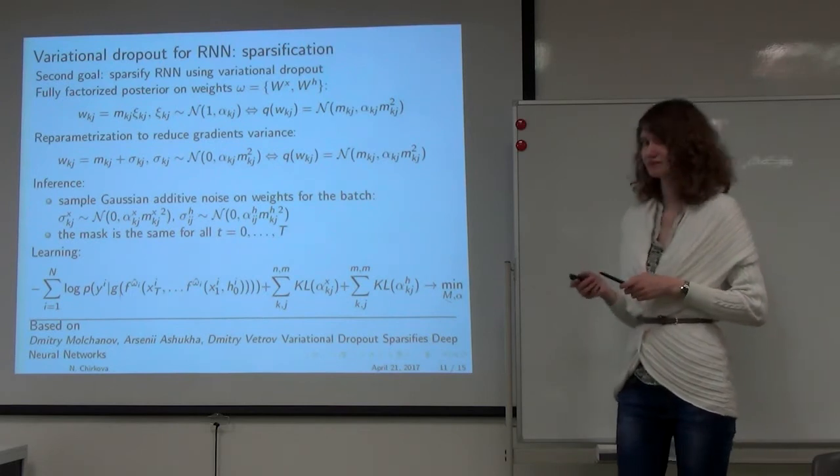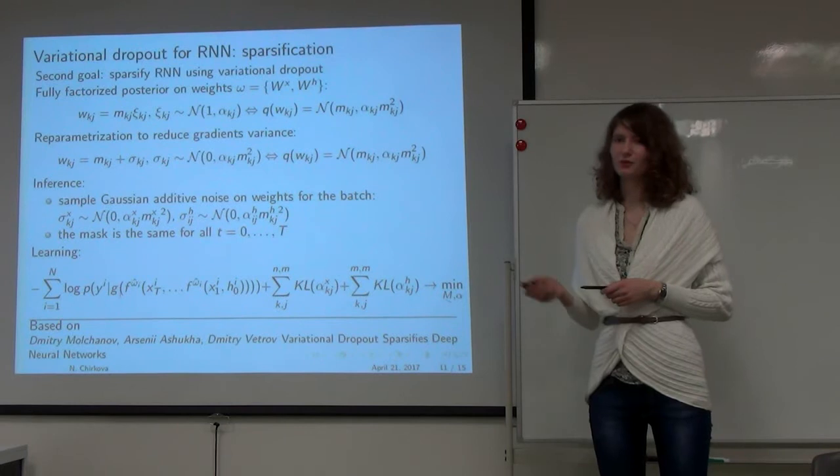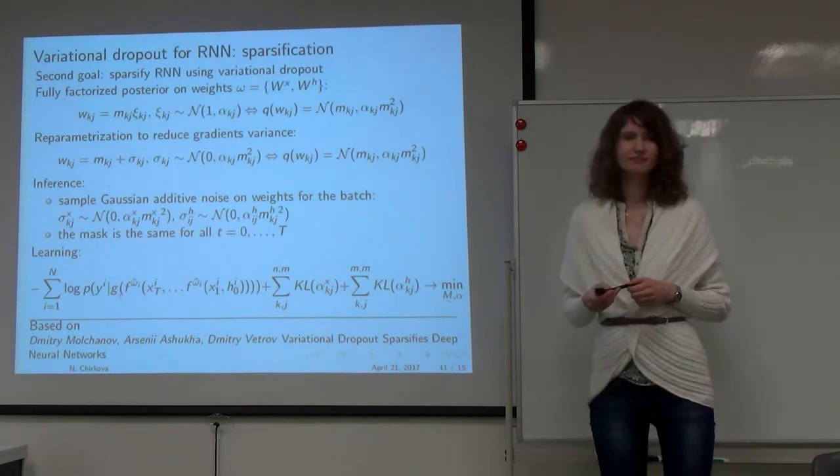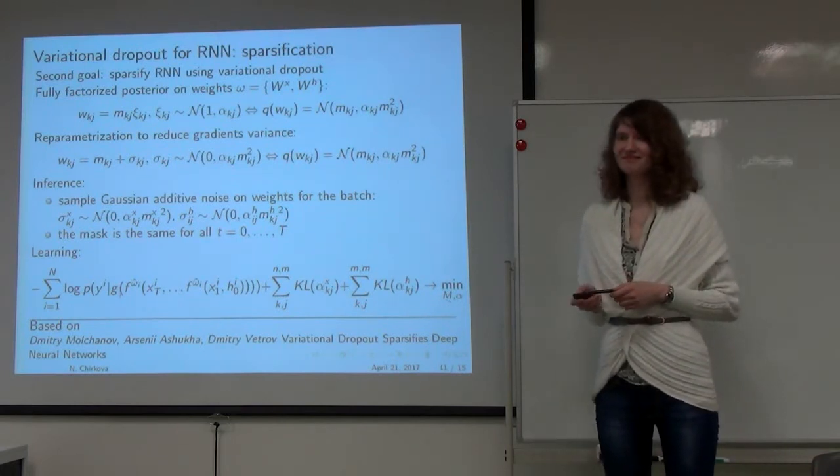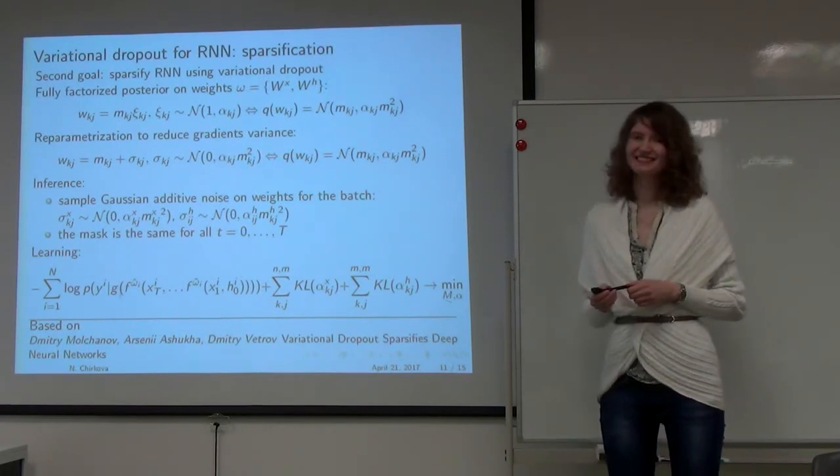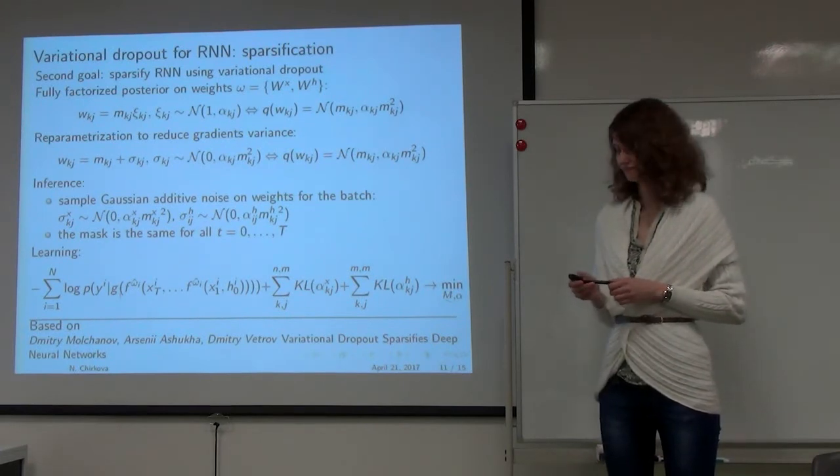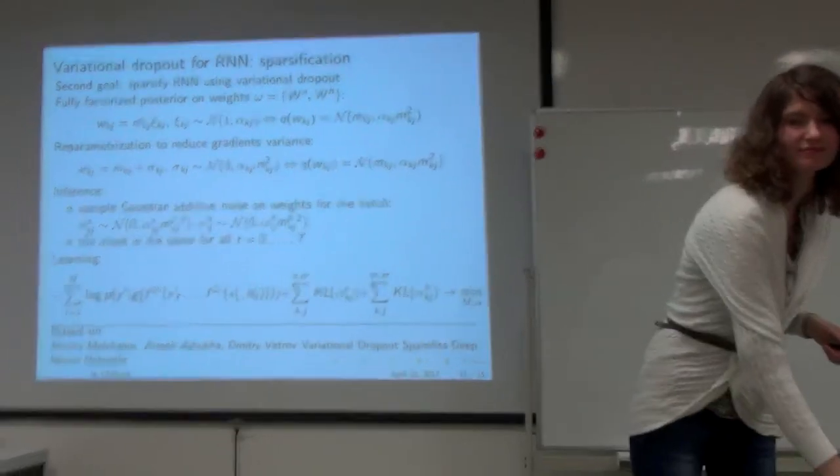How much sparsity do we have now? 93%. But with some loss of quality. We still have time to improve our results, and at least as a proof of concept, it works, which is always surprising. Thank you, Nadya. Next is Nikita.